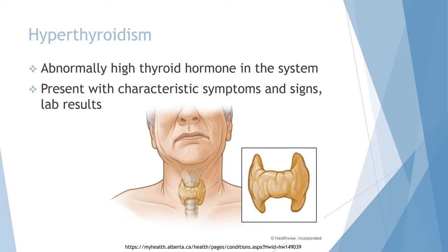Thyroid-related ophthalmopathy often presents with hyperthyroidism, and sometimes with hypothyroidism. As the name suggests, hyperthyroidism is an abnormally high thyroid hormone level in the system. There are characteristic symptoms and signs related to this presentation.